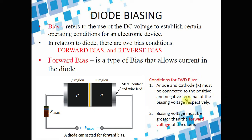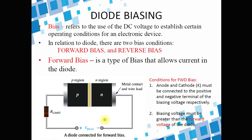Here are the conditions for forward bias: the positive terminal of the battery must be connected to the positive side, or the anode of the diode, and the negative side should be connected to the negative side. Second, the biasing voltage should be greater than the forward voltage of the diode. In the case of silicon, it is 0.7 volts. So the bias voltage must be greater than 0.7 volts for the diode to conduct current. If it is less than 0.7 volts, the diode will not turn on and will not conduct current.